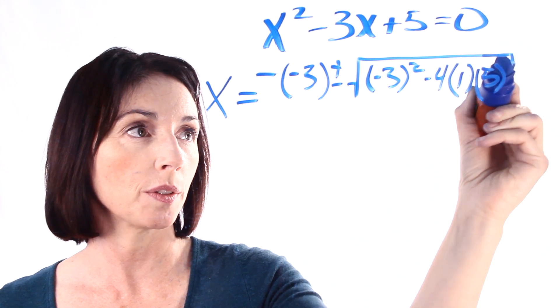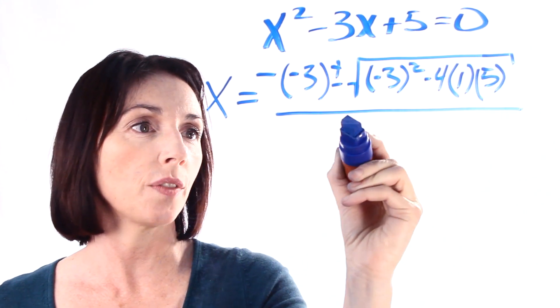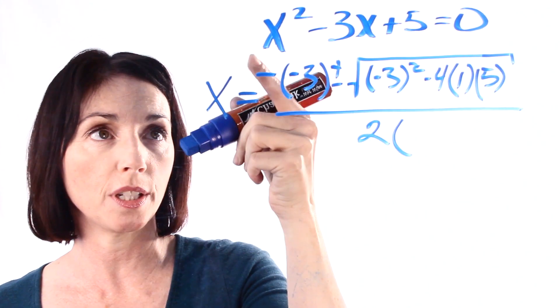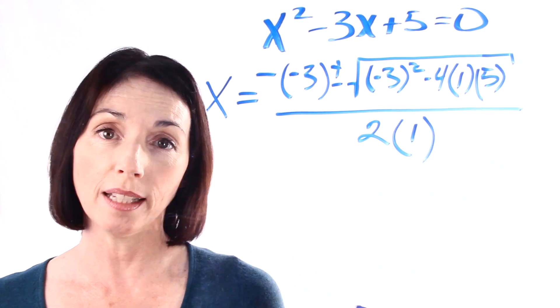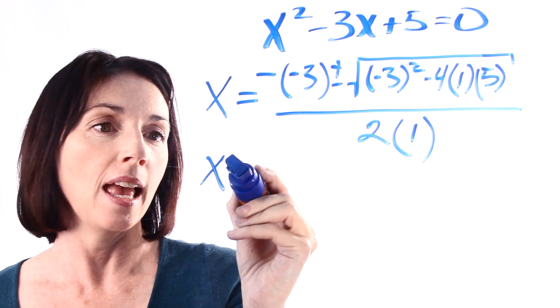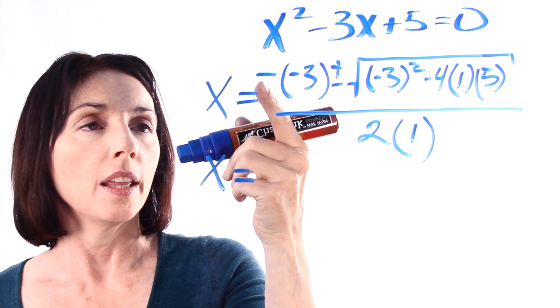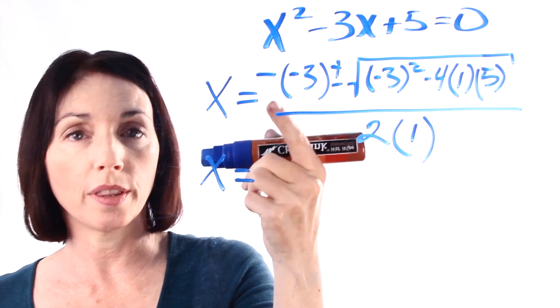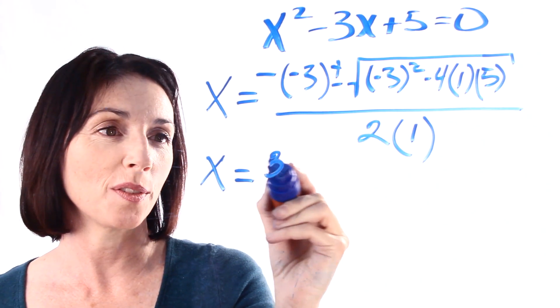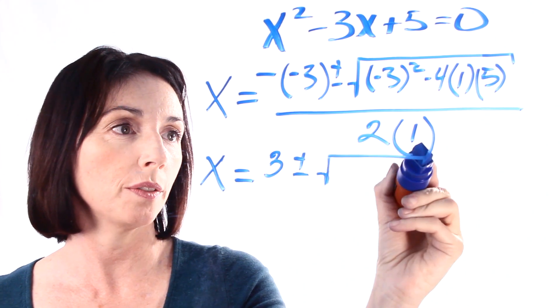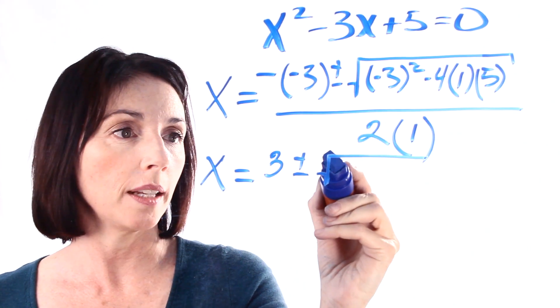That's all under the square root symbol. And all of that is divided by 2 times a, which again a is 1. Okay, so let's see what happens now. x equals the opposite of negative 3, or the negative of negative 3 is just positive 3, plus or minus the square root of negative 3 squared is 9.